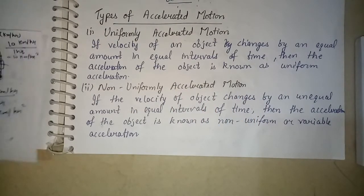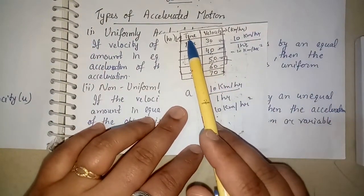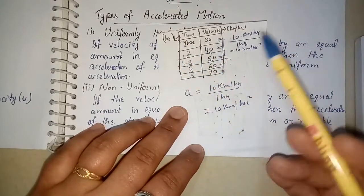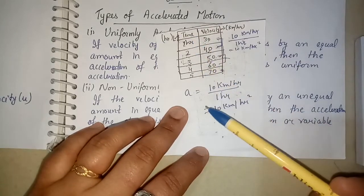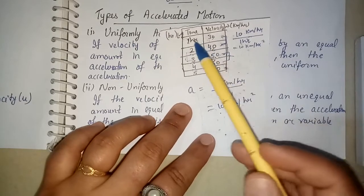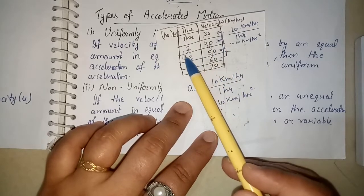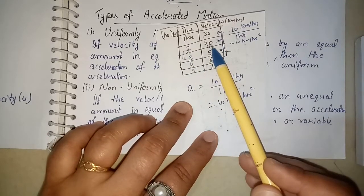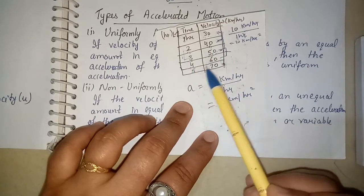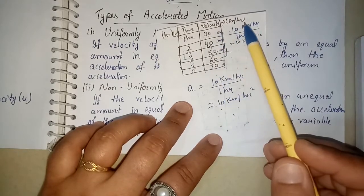Let us explain with the help of an example. Here I have a situation where I have written time and velocity. Let us see how the velocity is changing. In 1 hour its velocity is 30, in 2 hours it is 40, in 3 hours it is 50, in 4 hours it is 60, and in 5 hours it is 70. Velocity is taken in km per hour.